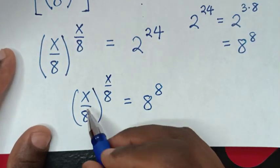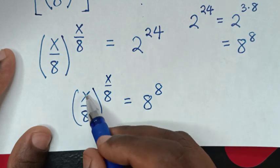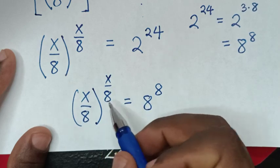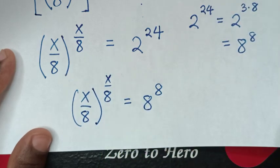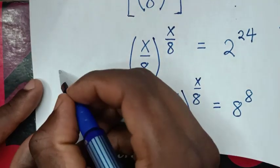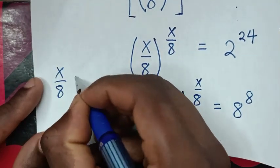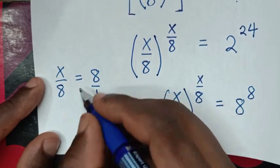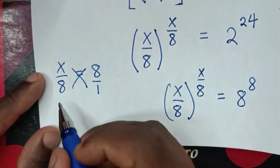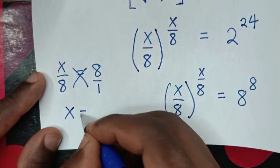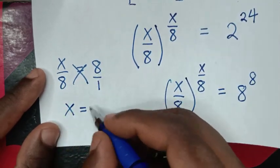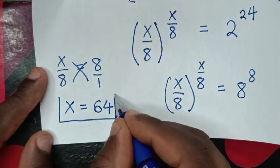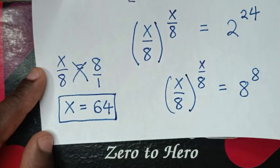Now we have base of x over 8 equal to base of 8, and power of x over 8 equal to 8. Therefore x over 8 is equal to 8. This 8 is same as 8 over 1, so we cross multiply. It will be x times 1 is x, equal to 8 times 8 is 64. Therefore x is equal to 64. This is our final answer.